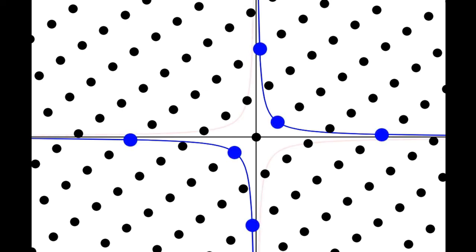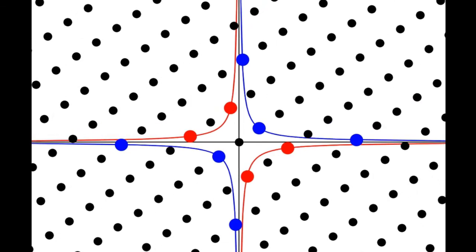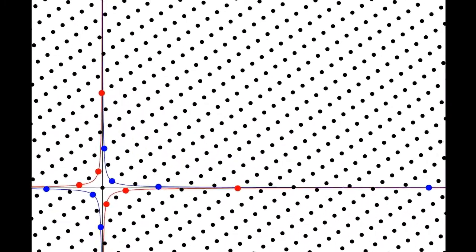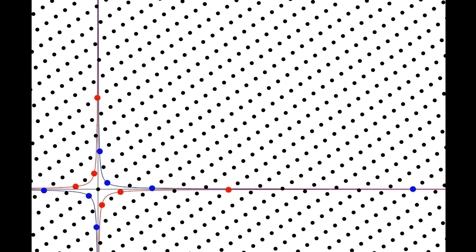And I'll leave you with this brief animation of Z adjoin root 2. The blue hyperbola shows elements of norm 1. The red hyperbola shows elements of norm minus 1. And as I zoom out, you can see the units.